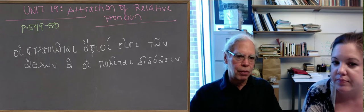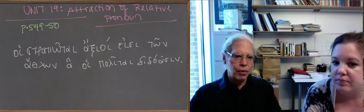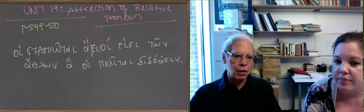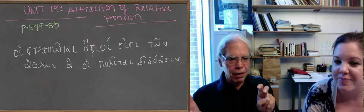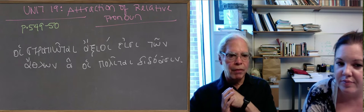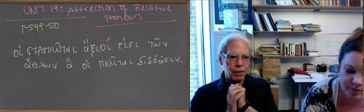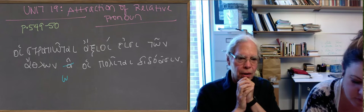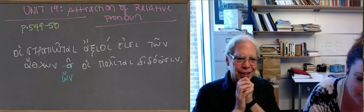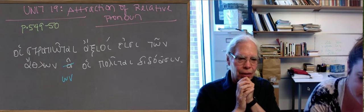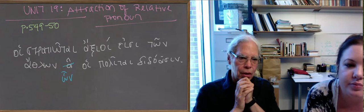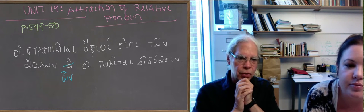And we do similar things to this in English. In English, the first thing that happens is that the ha there, which should be accusative, can be attracted, is the expression, into the case of its antecedent. So instead of having ha there, you can write this, see, you have hon. So you have hon, which is going to mean the same thing.